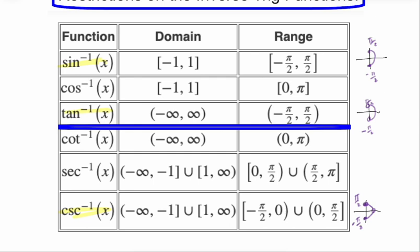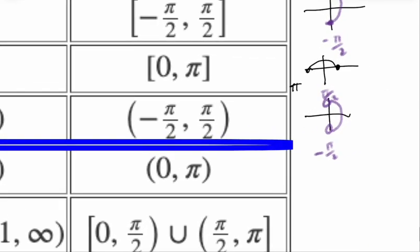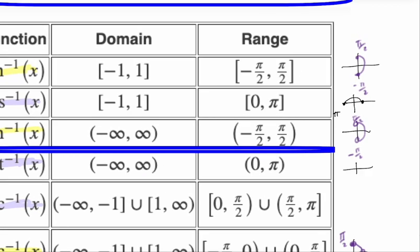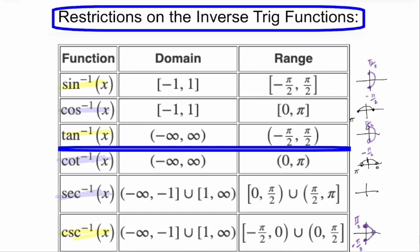Then cosine, cotangent, and secant go together. For these, we're only going to be looking for answers between 0 and π. The positives are in the first quadrant and the negatives are in the second quadrant. The only difference between cosine and cotangent is that cotangent has open circles at the endpoints. Secant is undefined at π/2.